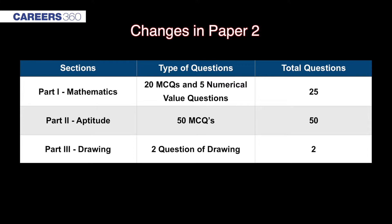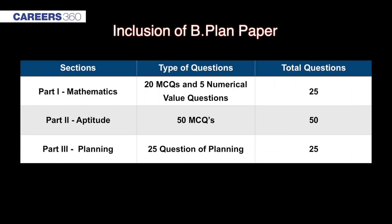The second change is in Paper 2 for B.Arch. Paper 2 will have three parts: Part 1 as Mathematics, Part 2 as Aptitude Test, and Part 3 as Drawing. Part 1 will have 20 multiple choice questions and 5 questions with answers as a numerical value. Part 2 will have 50 multiple choice questions, while Part 3, the Drawing section, will have 2 drawing questions.